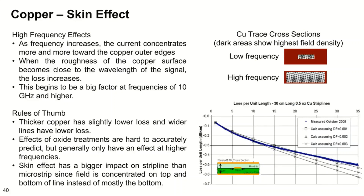Talking about high speed design, in particular the skin effect of copper: as frequencies increase, the current concentrates more and more towards the copper's outer edge. When the roughness of the copper surface becomes close to the wavelength of the signal, the loss increases. This begins to be a big factor at frequencies of 10 gigahertz and higher.